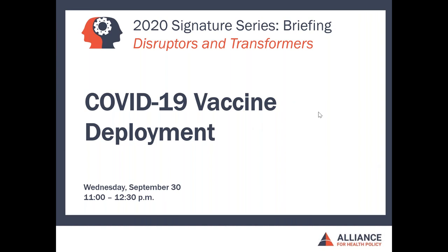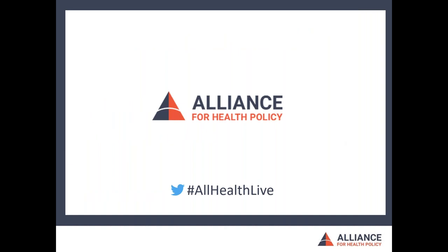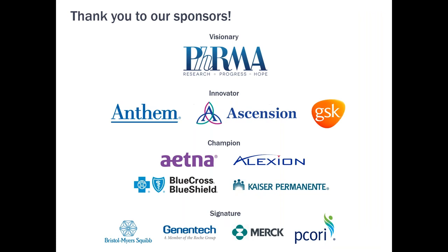Good afternoon, everybody. I'm Sarah Dash, President and CEO of the Alliance for Health Policy. For those who are not familiar with the Alliance, welcome. We are a nonpartisan resource for the policy community dedicated to advancing knowledge and understanding of health policy issues. We're thrilled to be hosting this afternoon's webinar on the COVID-19 vaccine deployment process. This briefing is the final event in the first theme of our 2020 Signature Series, Disruptors and Transformers, which has explored the short and long-term impacts of the ongoing COVID-19 pandemic and its potential to significantly transform our health care system. Today we will focus that on the vaccine effort. I'd like to thank our 2020 Signature Series sponsors, and remind everyone that you can use today's conversation on Twitter using the hashtag allhealthlive and follow us at allhealthpolicy.